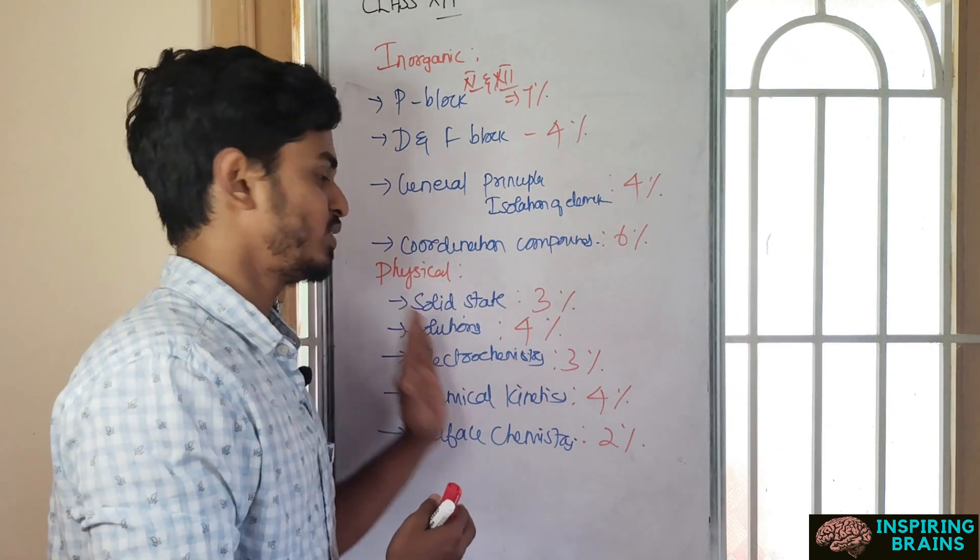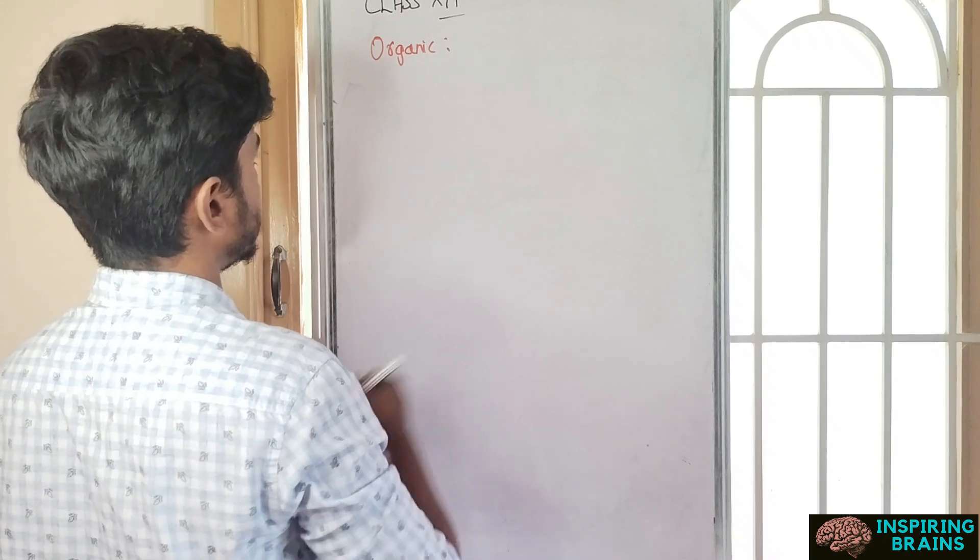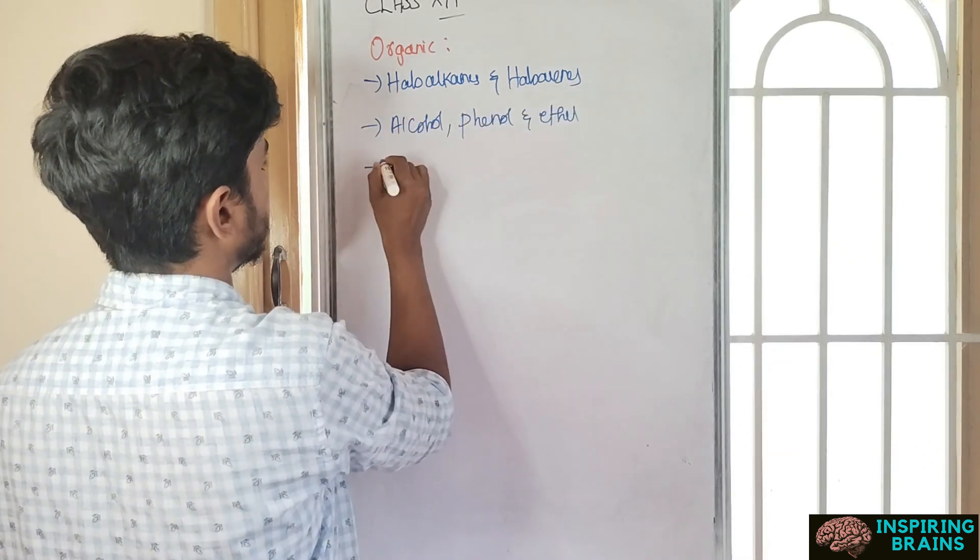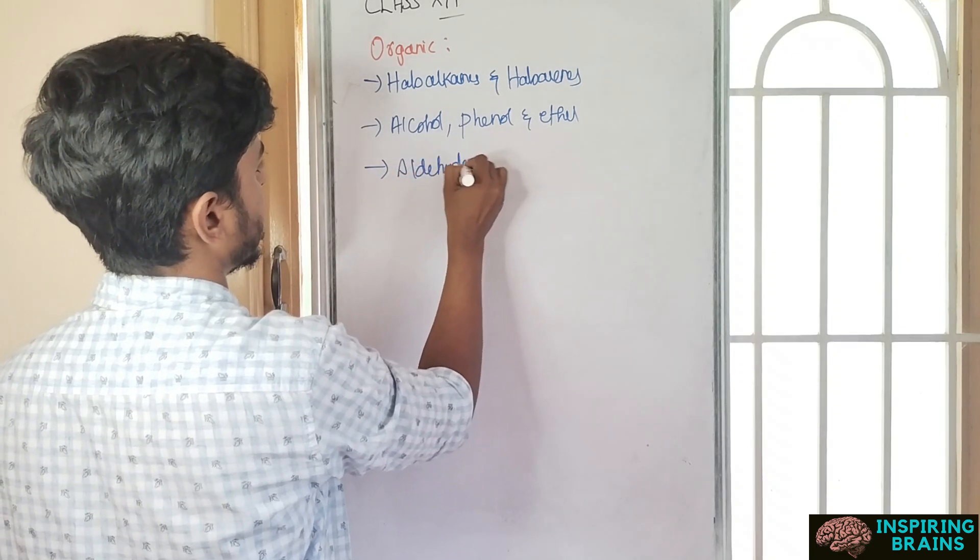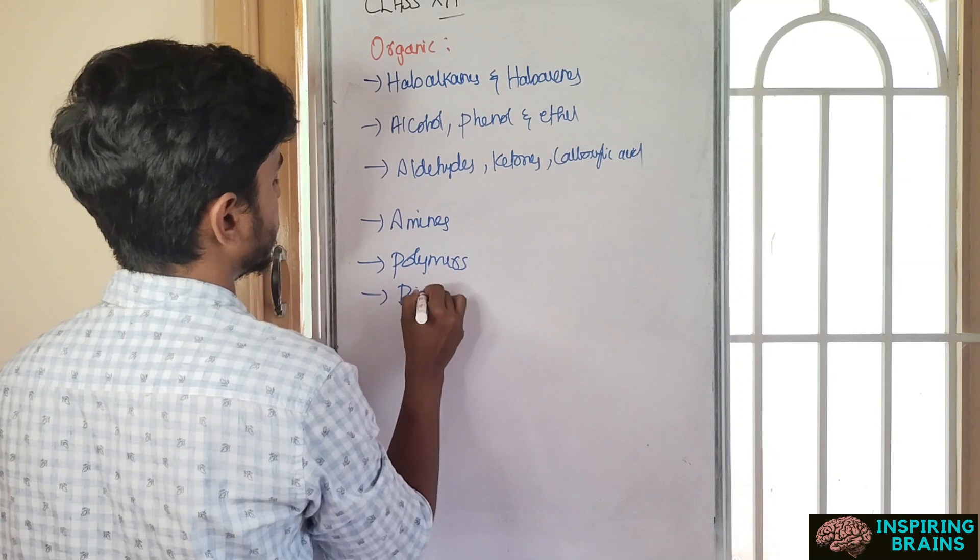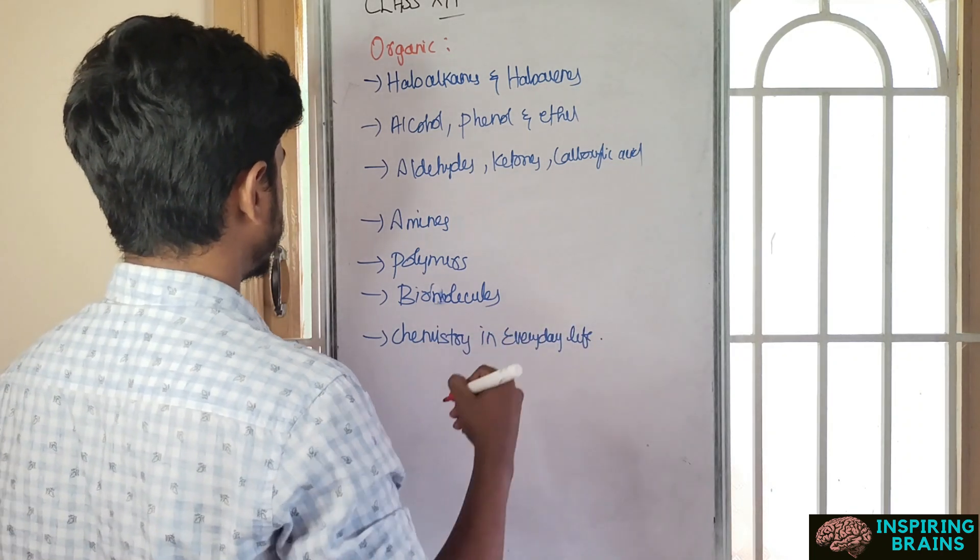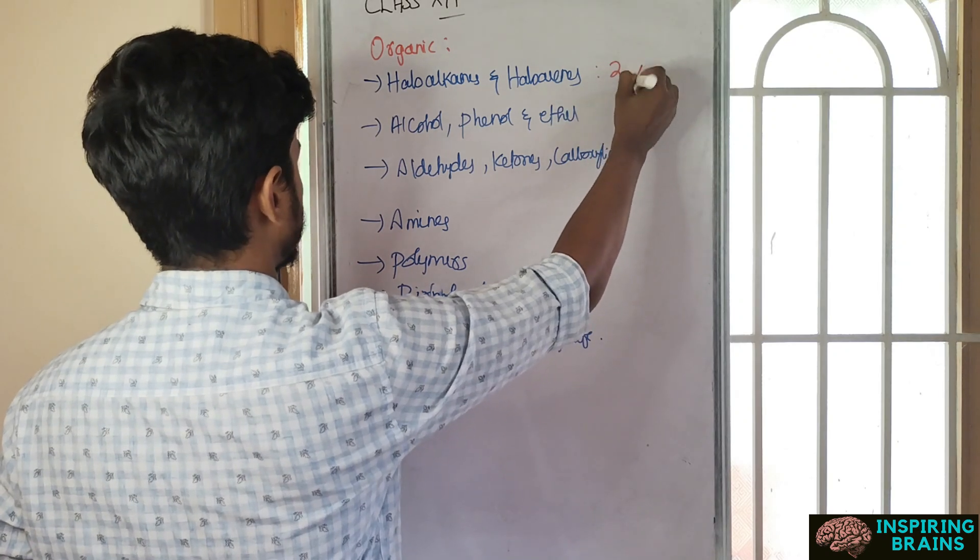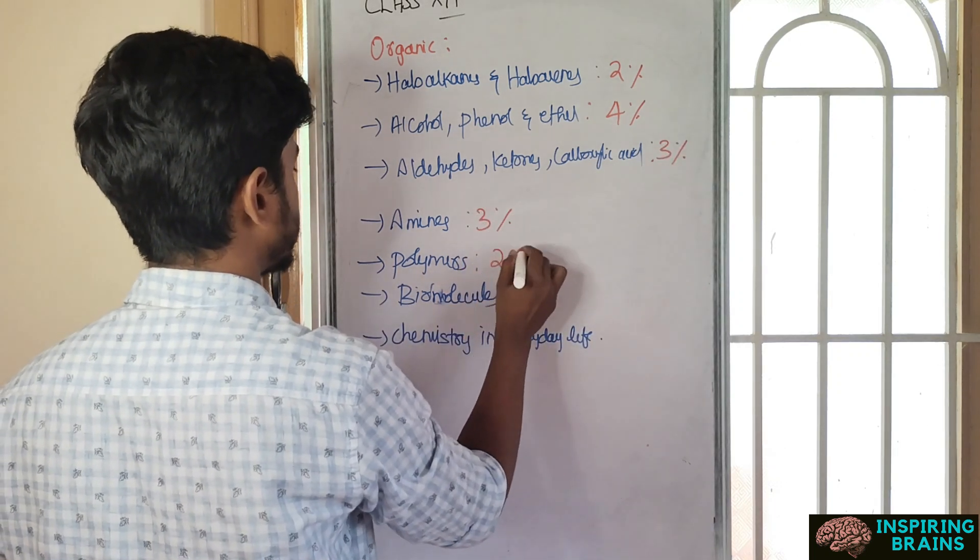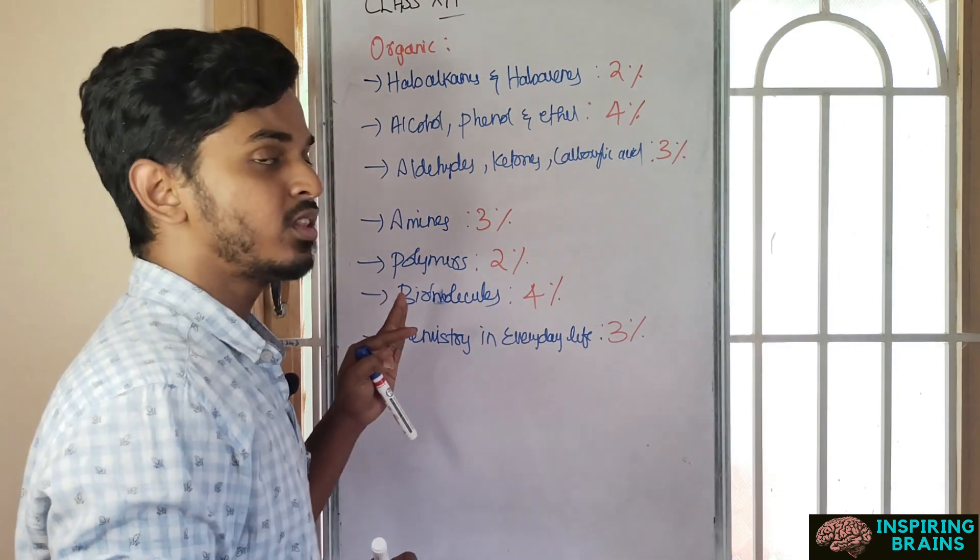Now going with organic chemistry. First lesson is haloalkanes and haloarenes, second alcohol phenol ether, third aldehydes ketones carboxylic acid, fourth amines, polymers, biomolecules, chemistry in everyday life. Going with percentages: haloalkanes is 2 percentage, this will be 4, 3, and then 3 percentage. Polymers is 2, biomolecules 4, chemistry in everyday life is 3 percentage again.